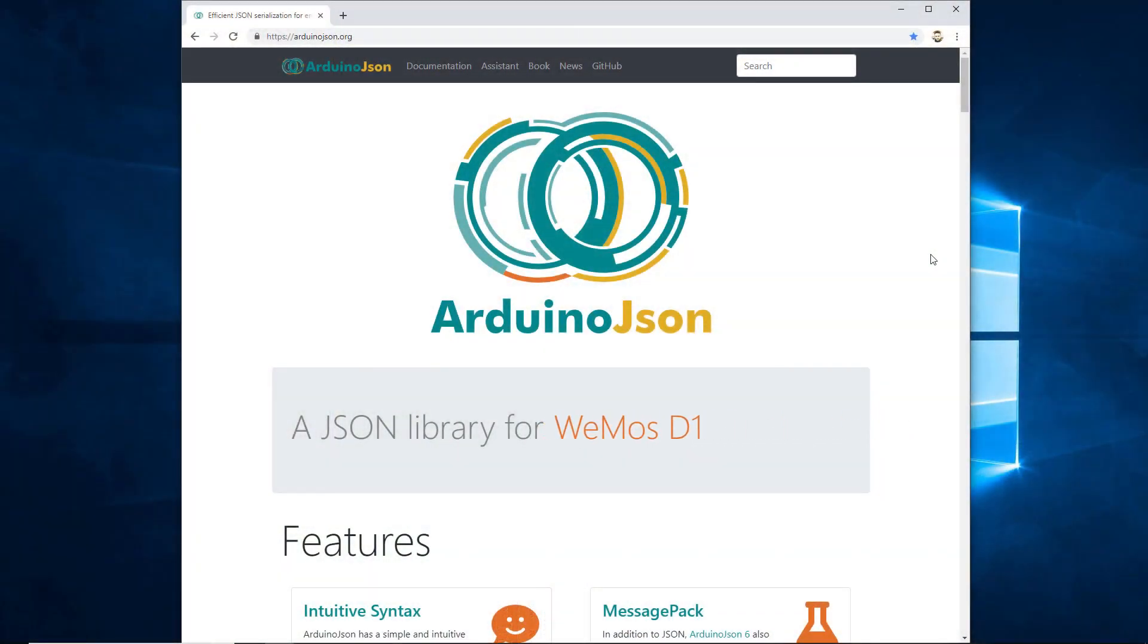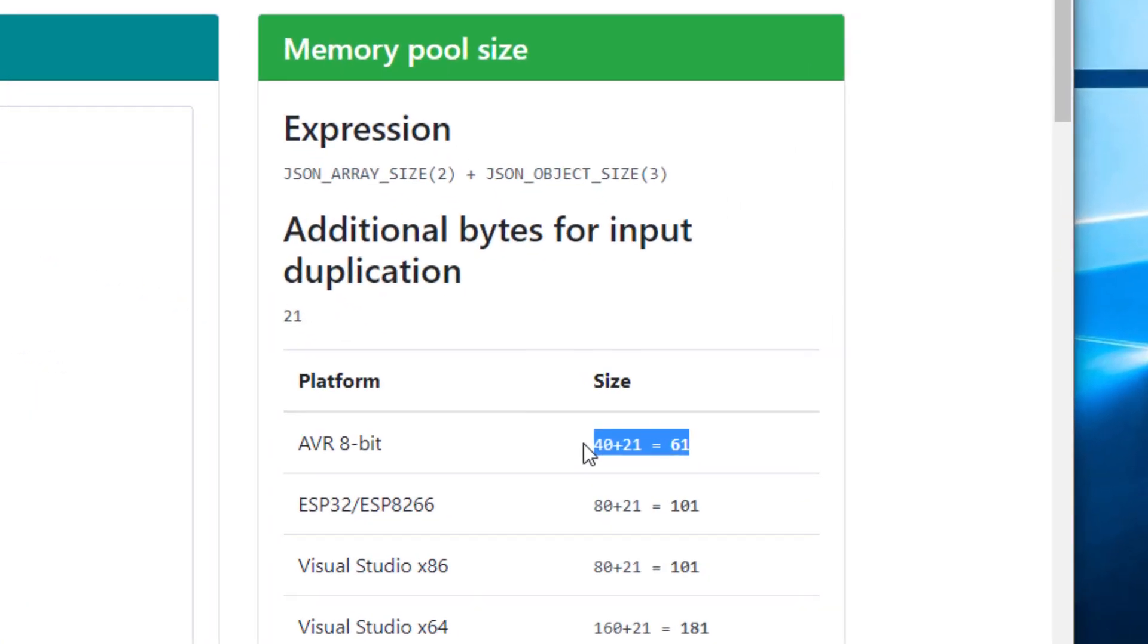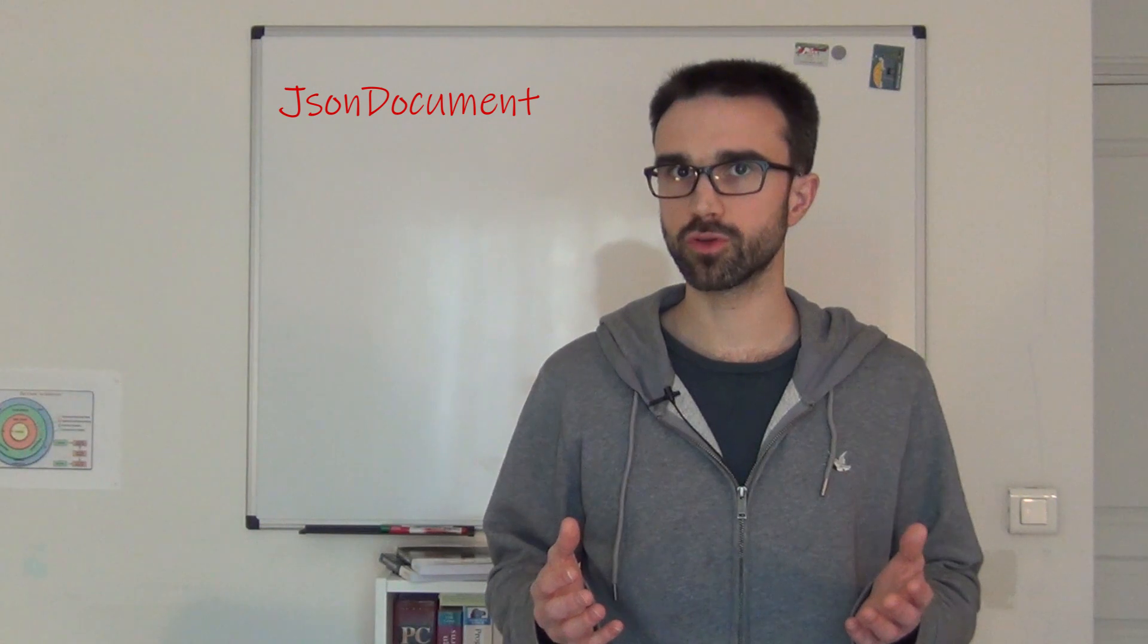To use the Arduino JSON assistant, open arduinojson.org in your browser, and click on Assistant. Then, copy your JSON document into the input box, and the assistant will compute the required capacity. In our case, it says 61 bytes. So 256 is more than enough. Now that our JSON document is ready, we can call deserializeJSON.